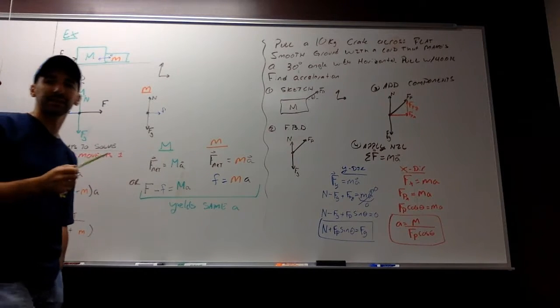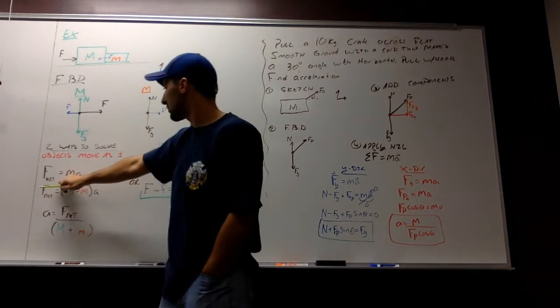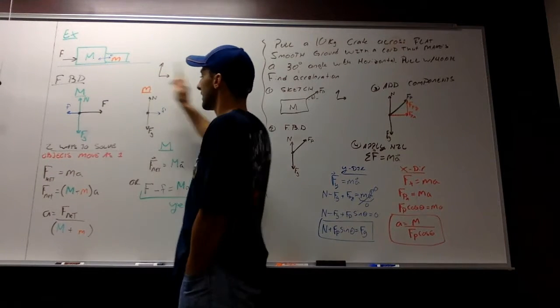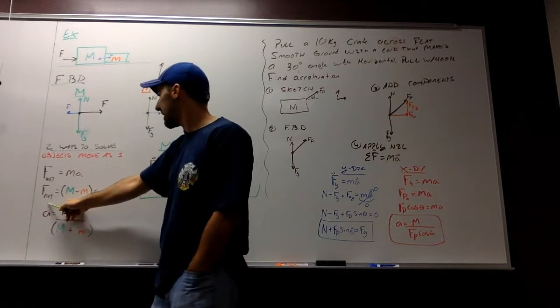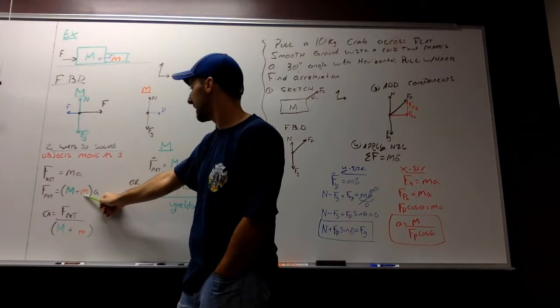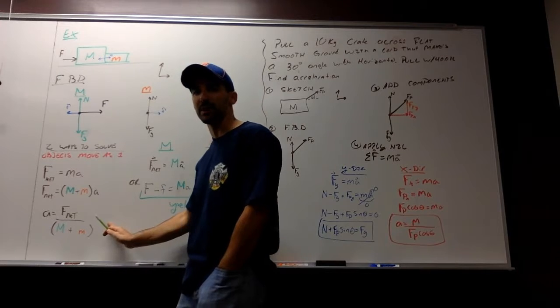Now if I wanted to solve for the acceleration, there are two different ways to solve this problem. The first, if we're going to apply F net equals Ma, that's all of my forces, equals the mass times the acceleration of this whole thing. Well, my net force, that's F, is the big mass, M, plus the small mass, m, times A, rearrange to find my acceleration. This is a very straightforward, easy problem.